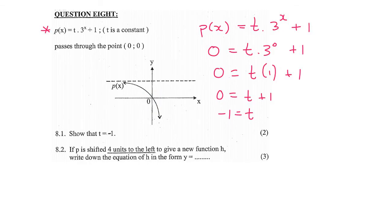Question 8.2: If p, so the graph p, is shifted 4 units to the left to give a new function h, write down the equation.